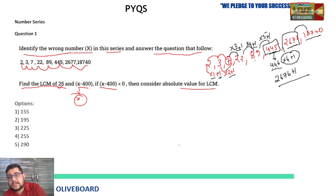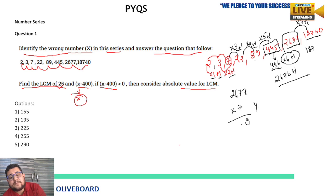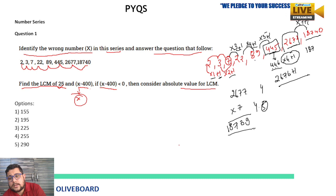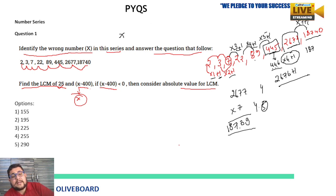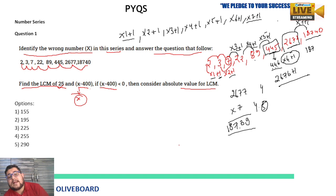Now applying 2677 × 7 + 1: 2677 × 7 = 18739 + 1 = 18740. Yes, the logic works. The complete pattern in this series is: multiply by 1, 2, 3, 4, 5, 6, 7... and add 1 each time. So the wrong number in the series is confirmed as 445, and if asked for the next number it would be 18740 × 8 + 1.